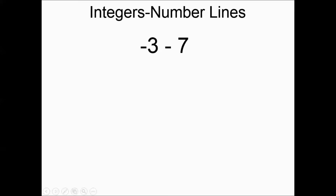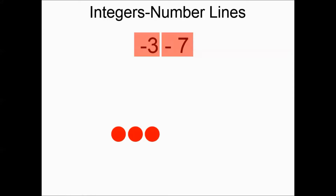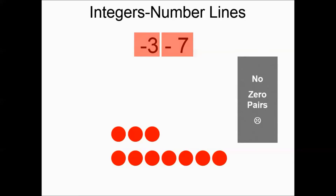Negative three minus seven: that's three negative chips and seven negative chips. Are there any zero pairs created to cancel out? There are none. So all you need to do is count up the chips — there are ten chips and they're all negative chips, so your answer is negative ten.